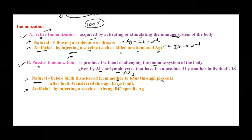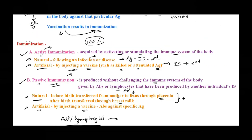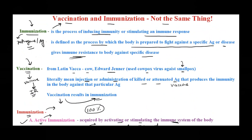After birth, immunity is also transferred through breast milk from mother to baby. For artificial passive immunization, antibodies or lymphocytes are prepared from another individual's immune system and used as a vaccine to provide immune resistance. So we inject this vaccination with antibodies or lymphocytes to give artificial passive immunization. Immunization is immune resistance against a specific antigen or pathogen, and vaccination is just one way to acquire it.